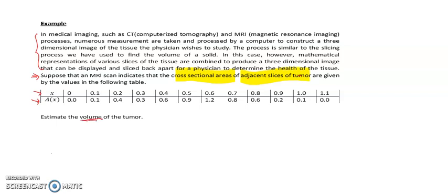To calculate the volume, the formula is the integration of the area with respect to X from A to B. For this case, our A is 0 and our B is 1.1. From this table, we have 1, 2, 3, 4, 5, 6, 7, 8, 9, 10, 11, 12. 12 data points.